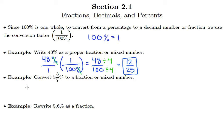Alright, this next example, we have 5 and 3/7 percent, and we want to convert that into a fraction or mixed number.